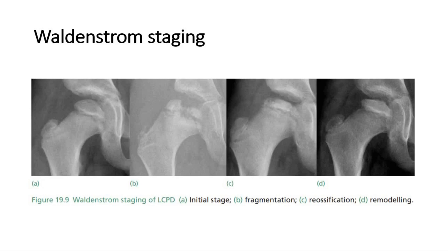The Waldenstrom staging of Perthes disease has 4 main stages: the initial stage, fragmentation, re-ossification, and remodeling. The first stage, the initial stage, describes the first 3 to 6 months of the disease, and it may be clinically and radiographically silent. However, if radiographic changes are present, there might be medial joint space widening, and a small sclerotic epiphysis with increased density in the ossific nucleus may be seen.